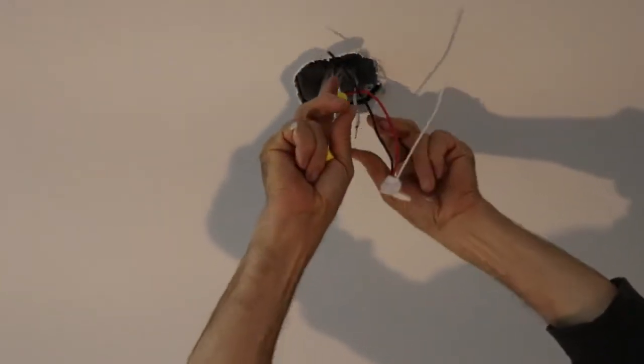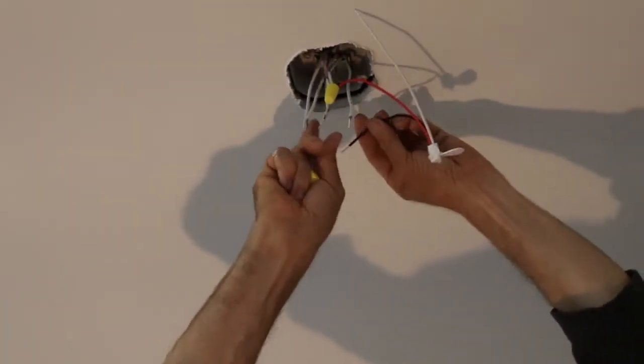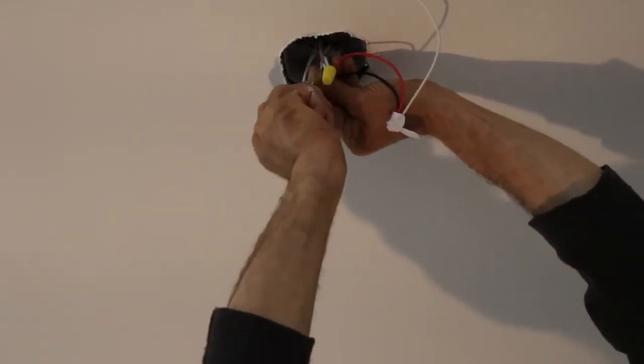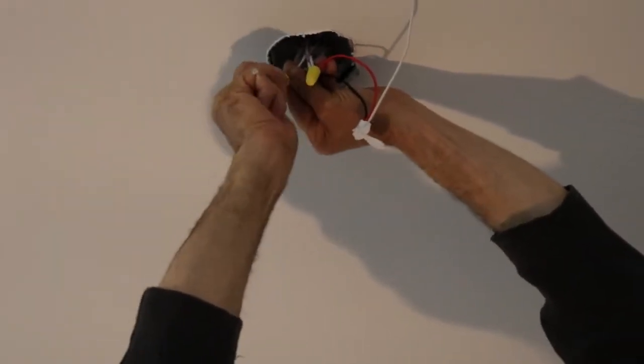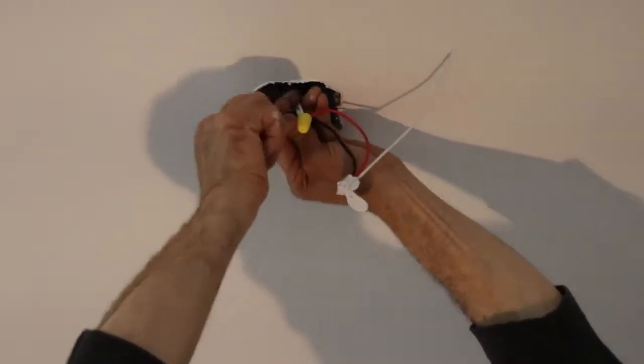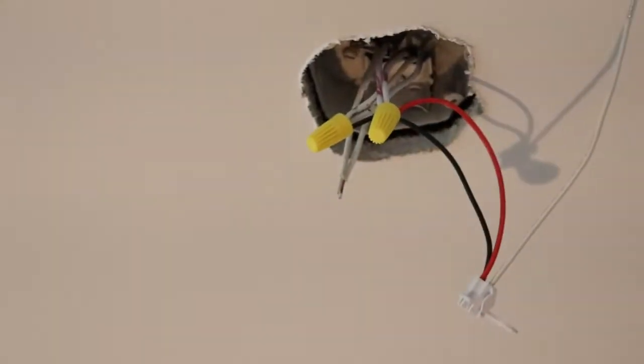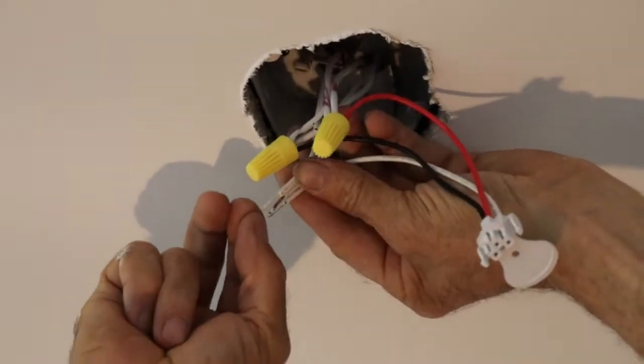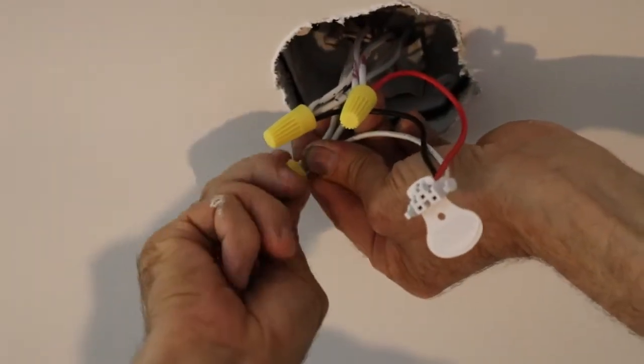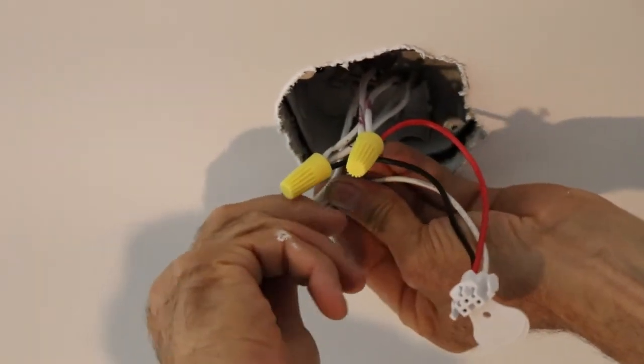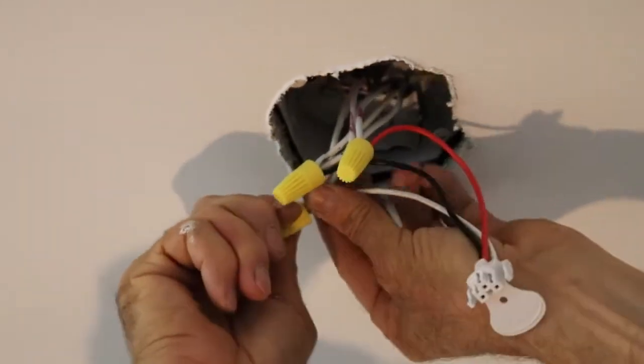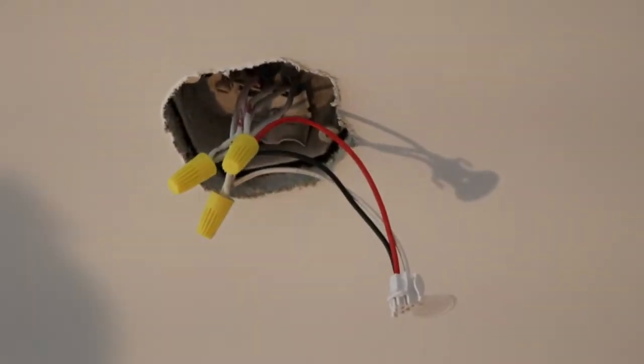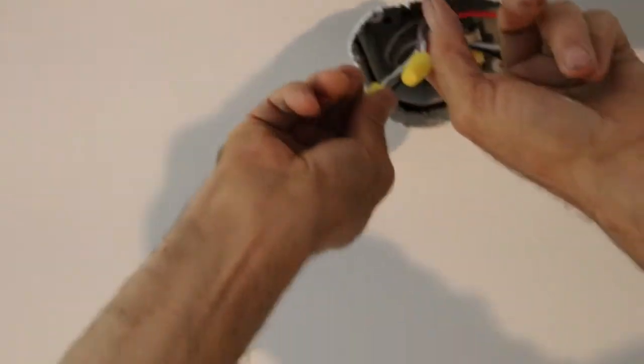Now we're going to go for the other side. Check to see the connection is good and tight. Here we're going to go with the hot wire. If you have more wires you just have to color match them. Here we go with the neutral. Once you're done, you just stuff everything back in the box.